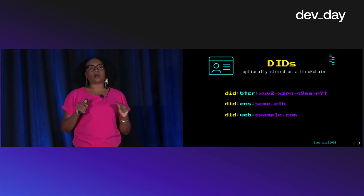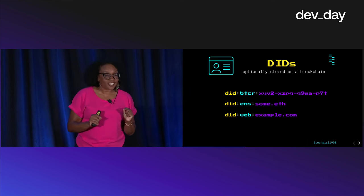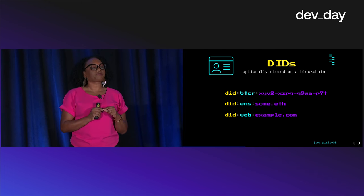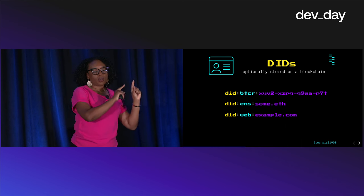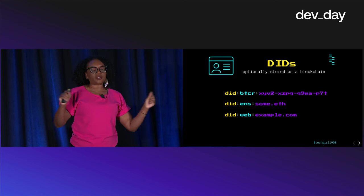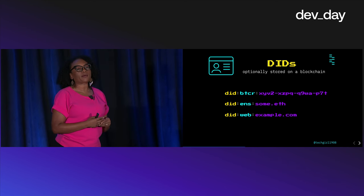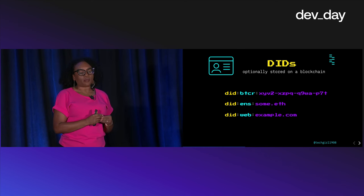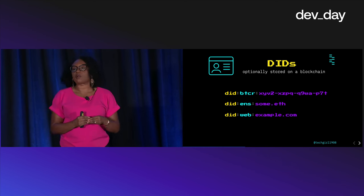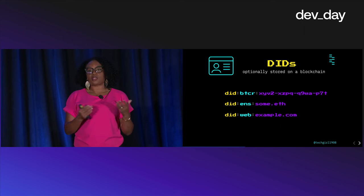Decentralized identifiers are the only parts of Web 5 that optionally touch a blockchain, and it's just the string. Because they have this standardized format, they can be used on any blockchain or no blockchain at all. For example, the first one is an identifier anchored on the Bitcoin blockchain, the second on Ethereum, and the last one doesn't use blockchain — it uses the Web.